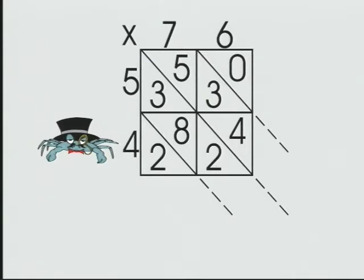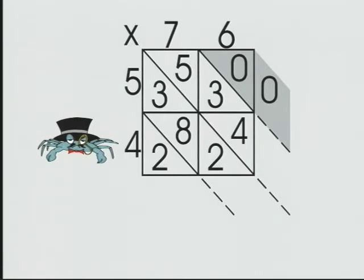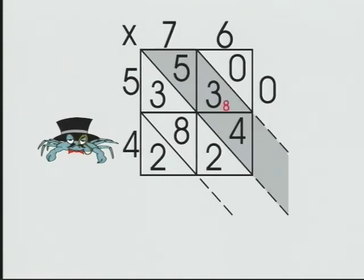Our multiplication done, we then add 0 ones, 5 plus 3, 8, 8 plus 4, 12. Save our hundreds for later. Record.